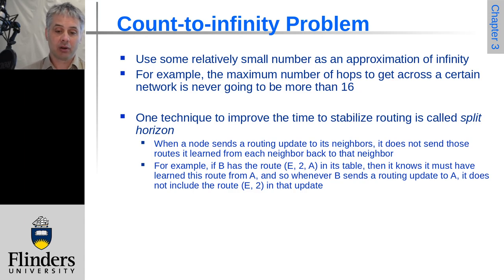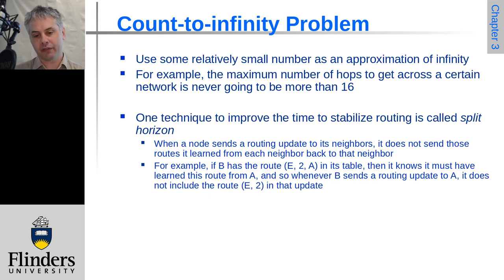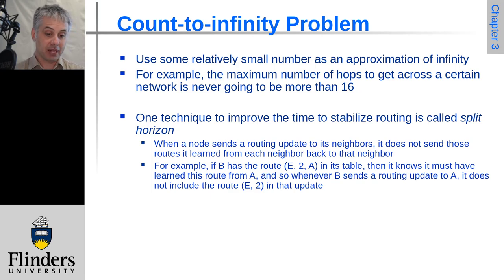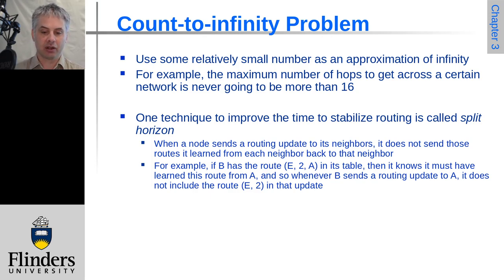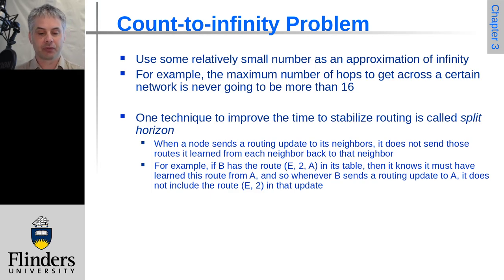One approach to this is to do what's called splitting the horizon. In this case, when nodes send out routing information to their neighbors, they don't send back information to the neighbors that they learned from that neighbor. For example, if B has a route to E via A that it thinks will take two hops, it knows it learned that from A. So whenever B sends information back to A, it doesn't include that route — so A can't mistakenly think that B has a route to E.